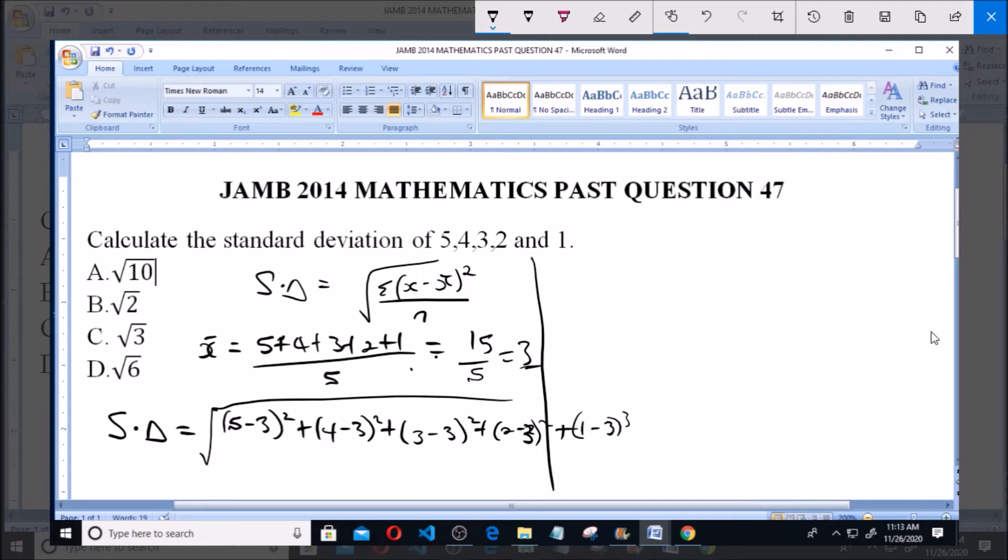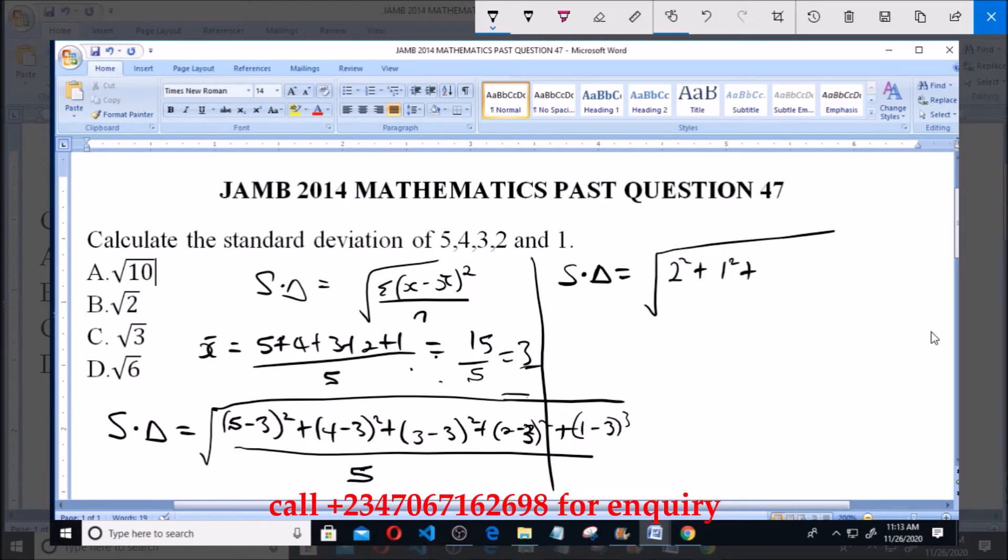Now all over n, and n is 5. So standard deviation SD is equal to the square root of 5 minus 3 will give us 2 squared, plus 4 minus 3 will give us 1 squared, plus 3 minus 3 will give us 0 squared, plus 2 minus 3 will give us minus 1 squared, all over 5.